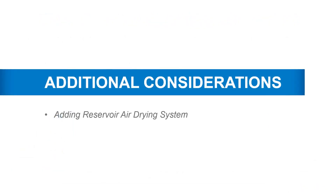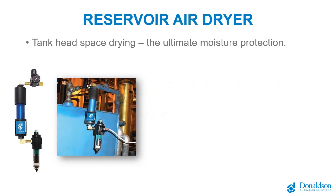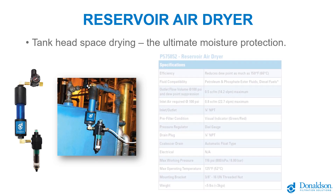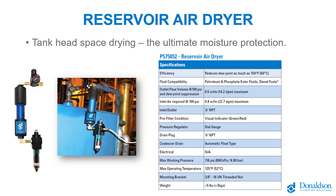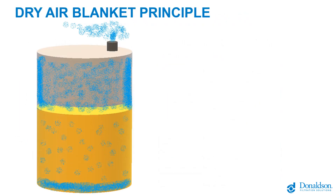Let's discuss additional considerations for keeping fluids clean and dry, including the Reservoir Air Dryer, or RAD system. Adding a RAD system purges clean dry air over the headspace of tanks to create a slight positive pressure. The RAD system requires 100 psi of shop air to operate. As the level of fluid in the bulk tank decreases and draws in air, temperature fluctuations in that headspace cause moisture to accumulate on the tank walls and run down into the fluid.